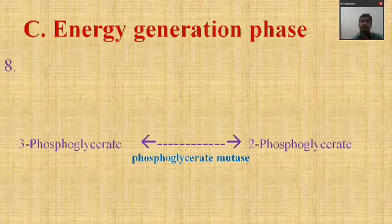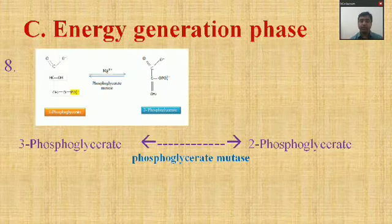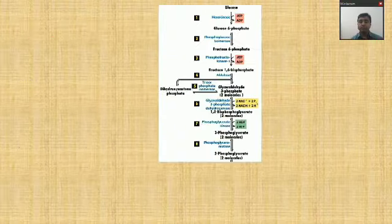Reaction eight of the energy generation phase: 3-phosphoglycerate is converted into 2-phosphoglycerate, catalyzed by the enzyme phosphoglycerate mutase. This is a reversible reaction. The position of the phosphate group is changed from carbon 3 to carbon 2. Again, shown in brackets as two molecules.